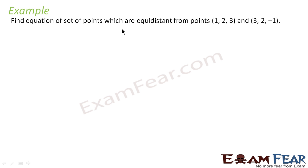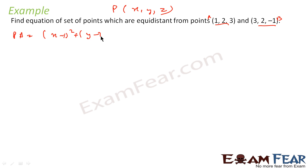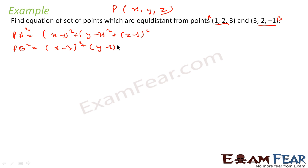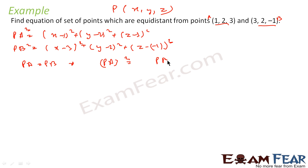In this example, we have to find the equation of the set of points which are equidistant from points A and B. Let P be the point (X, Y, Z). PA² is nothing but (X minus 1)² plus (Y minus 2)² plus (Z minus 3)². Similarly, PB² is (X minus 3)² plus (Y minus 2)² plus (Z plus 1)². Since PA equals PB, we can say PA² equals PB².